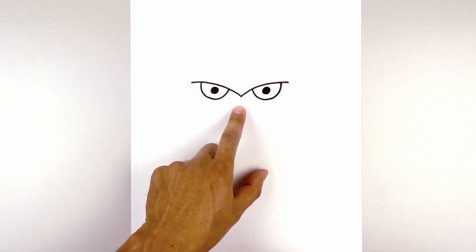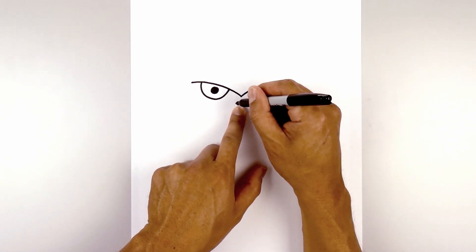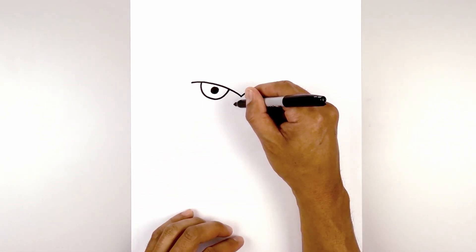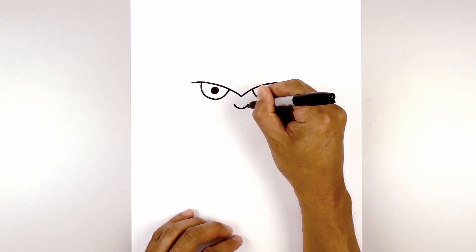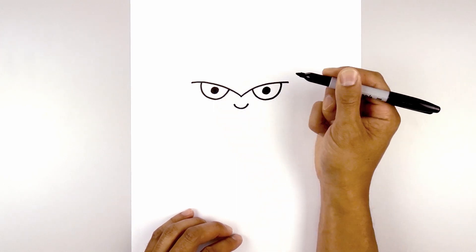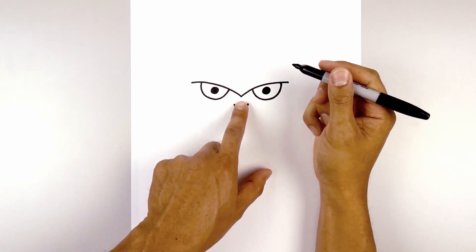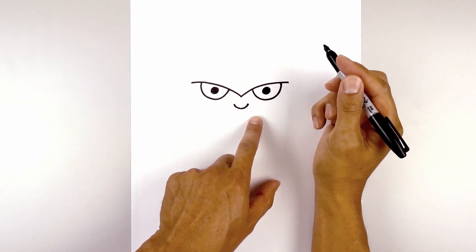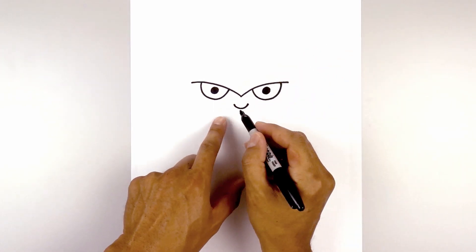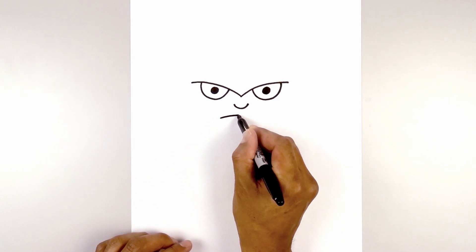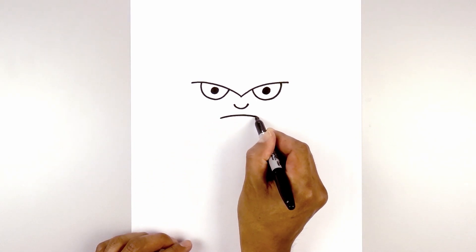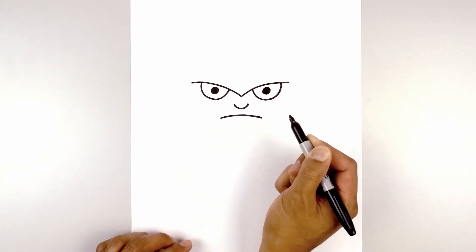Now from that center point we're going to step down and draw on the nose. Starting left we're going to curve down and then up on the right. Now let's move down and draw the edge of the mouth. Starting on the left, we're going to curve up and back down on the right.